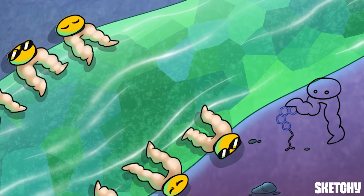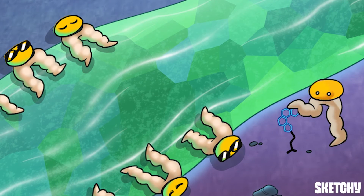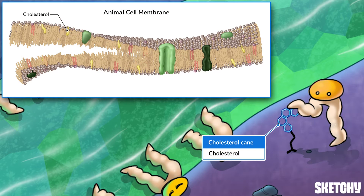The next membrane lipid is cholesterol, which also has a hydrophobic and hydrophilic region, so it interacts with the phospholipids in the bilayer and helps stabilize them — just like how this cane, shaped like a cholesterol molecule, is stabilizing this phospholipid alien who's just a few centuries past their prime. Cholesterol regulates membrane fluidity by making the cell membrane more fluid at low temperatures and keeping it from becoming overly fluid at high temperatures. It also takes up space between phospholipids, which prevents harmful materials from accumulating in the membrane.